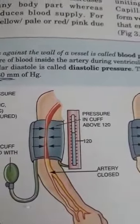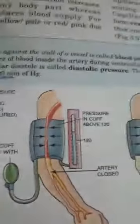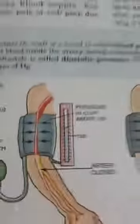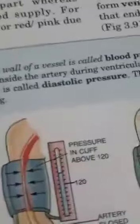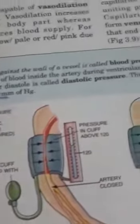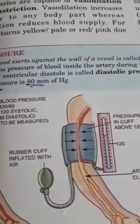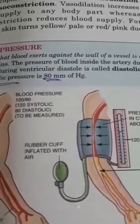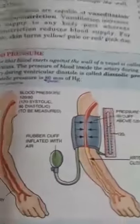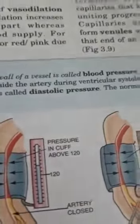You may have visited a doctor for a blood pressure check. The doctor gives you two numbers, like 120/80 or 130/90. The first number represents the systolic pressure and the second represents the diastolic pressure.